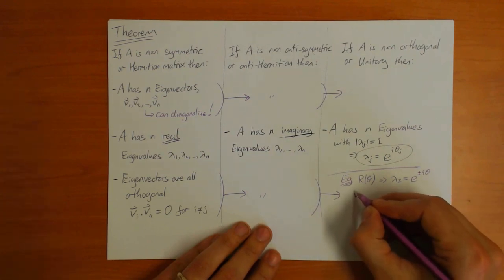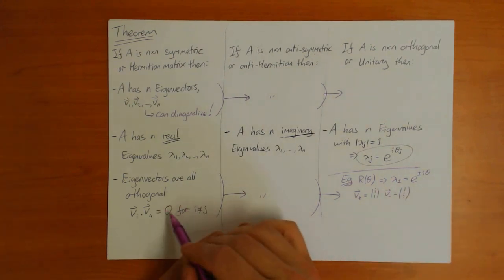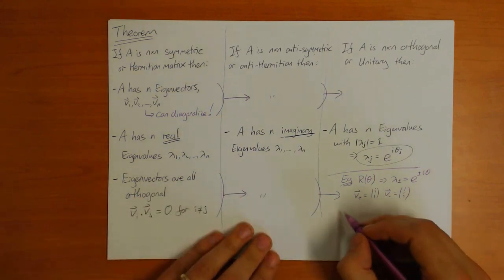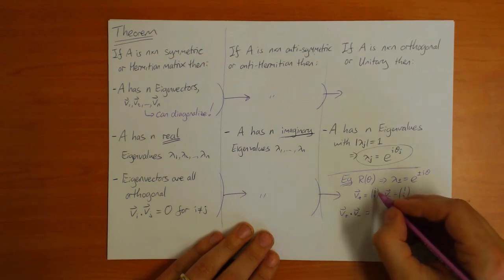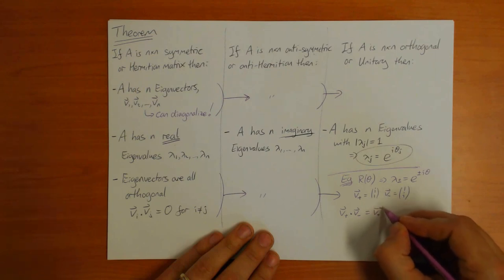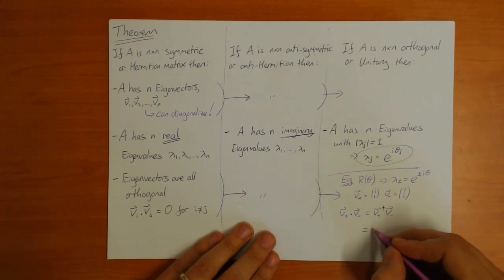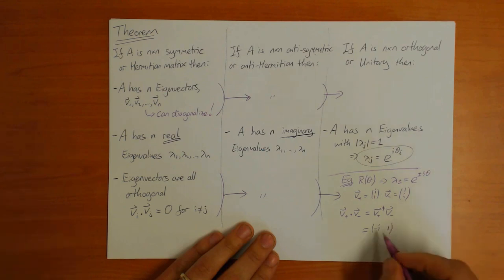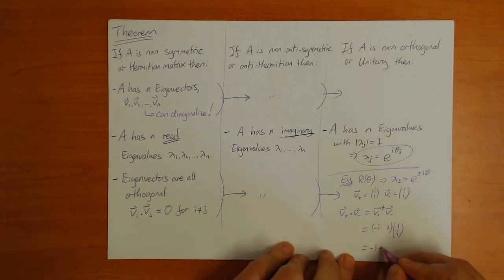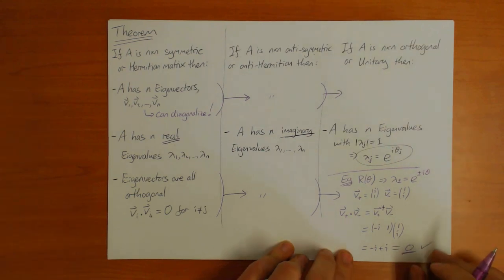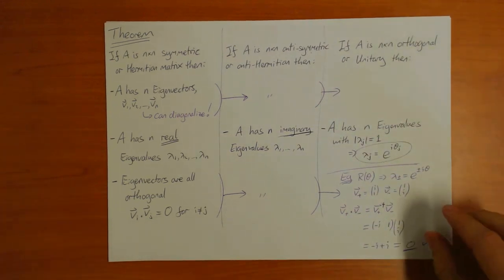Also, you found that v plus was i, 1, and v minus was 1, i. We can check this part of the theorem as well, that they're orthogonal. So v plus dot v minus - this is equal to v plus dagger, so you take the complex conjugate as well, times v minus. So this is minus i, 1, that's v plus dagger, times 1, i, which is minus i plus i, which indeed is zero. So as claimed, the vectors are orthogonal. So that's a simple example of this theorem. And as I said, next I'm going to prove it.